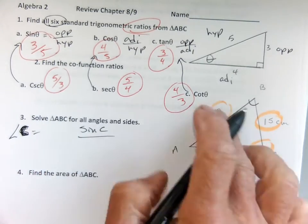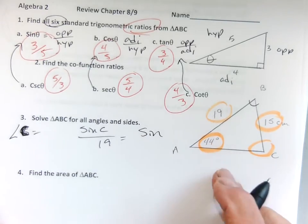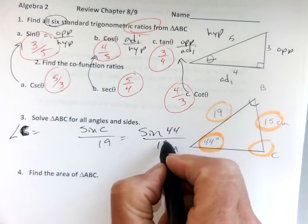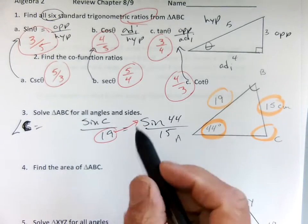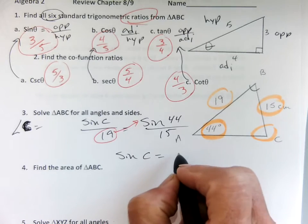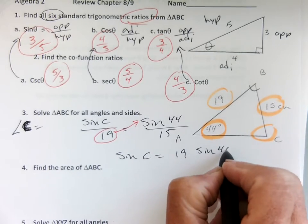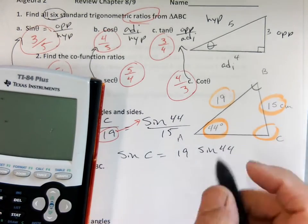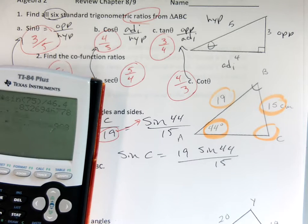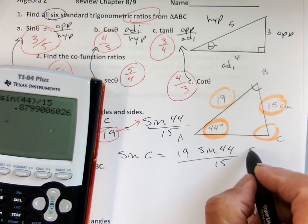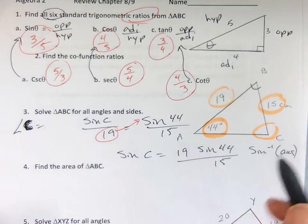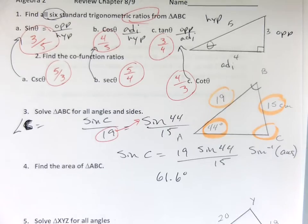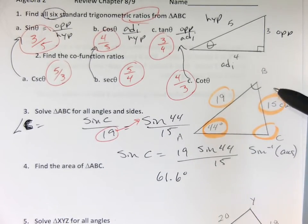We'll go sine of C over 19 equals sine of 44 over 15. I will cross-multiply and go: sine of C equals 19 times sine of 44, divided by 15. Use your calculator — I get a decimal, like I should — and I'll take the sine inverse of that answer, getting about 61.6 degrees. And if I needed angle B, I'd just subtract from 180.